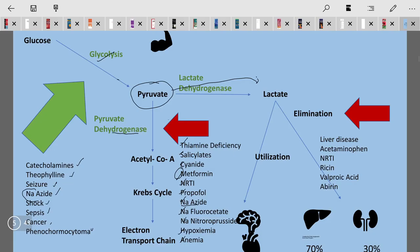The other conditions where lactate elimination is inhibited are mainly seen in liver disease, acetaminophen toxicity or overdose, and NRTIs—NRTIs inhibit pyruvate dehydrogenase and also inhibit elimination—and then resin poisoning, valproate, and ibrutinib. In all these conditions lactate elimination is inhibited.